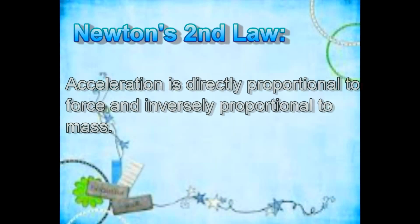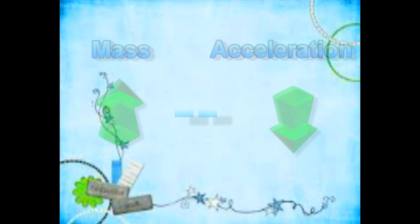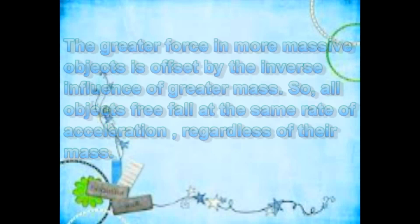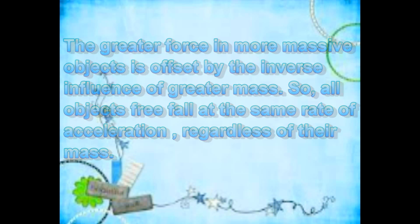More massive objects will only fall faster if there is an appreciable amount of air resistance present. The actual explanation involves the concepts of force and mass. According to Newton's law, the acceleration of an object is directly proportional to force and inversely proportional to mass. Increasing force tends to increase acceleration, while increasing mass tends to decrease acceleration. Thus, the greater force on more massive objects is offset by the inverse influence of greater mass. Subsequently, all objects freefall at the same rate of acceleration regardless of their mass.